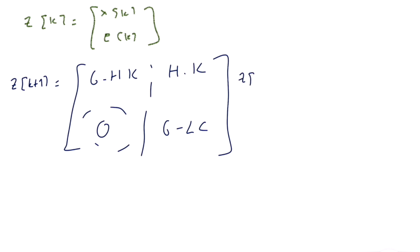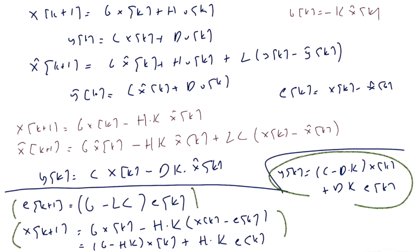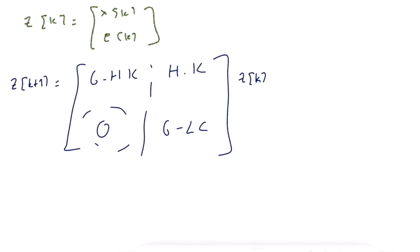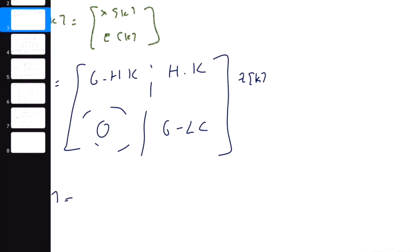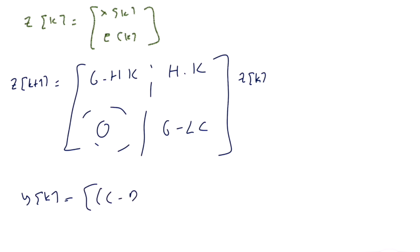This is the combined system matrix G(K). There is no external input because we have eliminated it — the system becomes autonomous. We also write the output equation: Y(K) = [C - D·K, D·K] · Q(K). The combined system is 2N-dimensional, so for example a third-order system becomes sixth-order. If we add a reference input, the transfer function will have six poles.